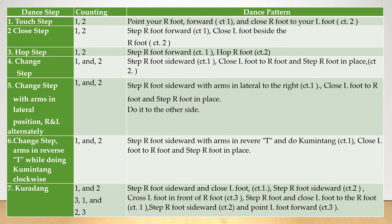Chain step with arms in reverse T while doing kumintang clockwise, counting one and two: step right foot sideward with arms in reverse T and do kumintang, count one; close left foot to right foot and step right foot in place. Kuradang, one and two: step right foot sideward and close left foot, count one; step right foot sideward, count two; close left foot in front of right foot, count three; step right foot and close left foot to the right foot, count one; step right foot sideward, count two; and point left foot forward, count three.